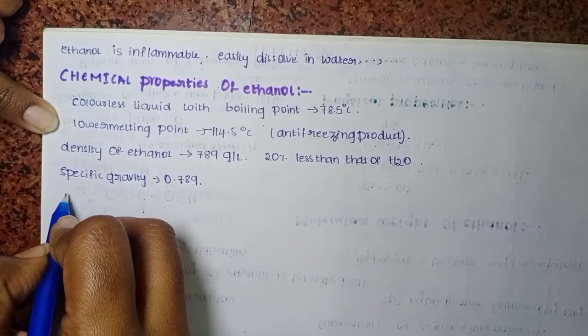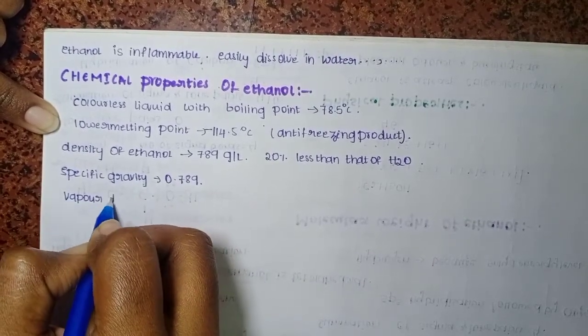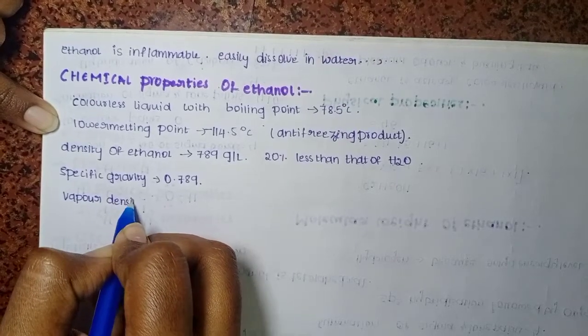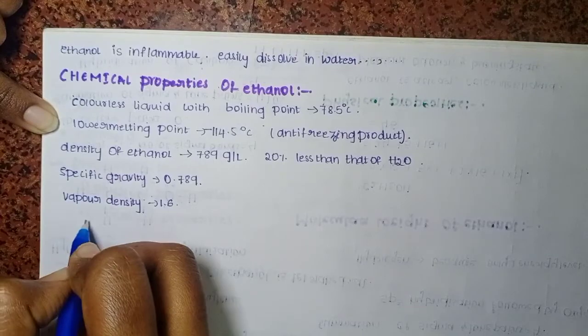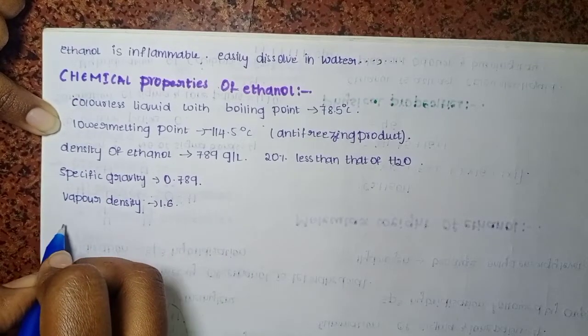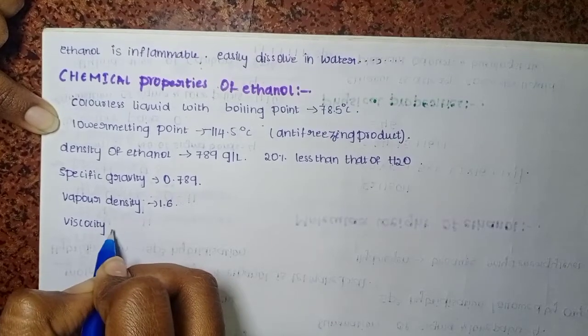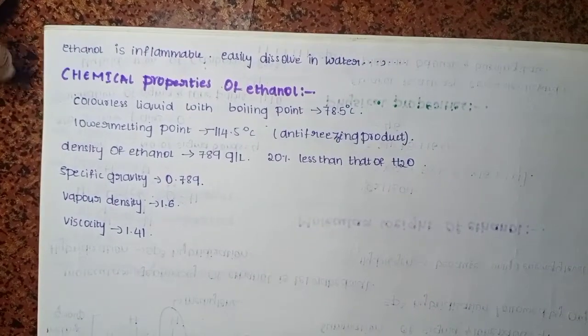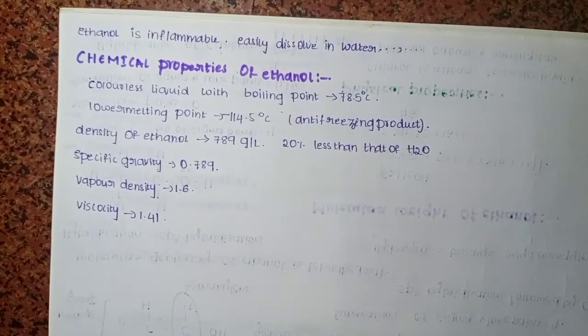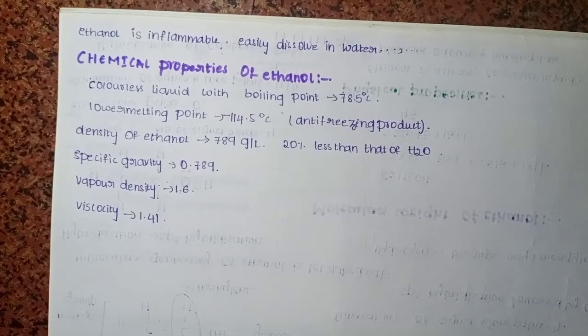The vapor density of ethanol is 1.6. The viscosity is 1.41. And the vapor pressure - vapor pressure is entirely different from vapor density.